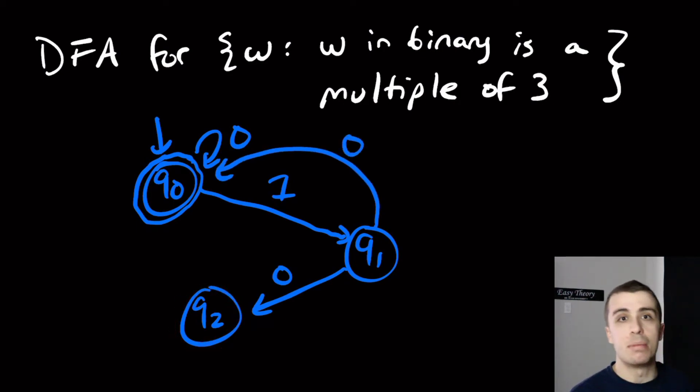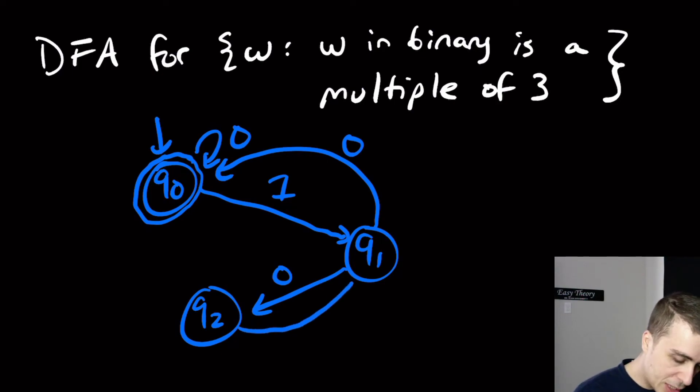And then for this state, if we multiply the remainder by 2, we get 4. So then reduced by 3, it becomes 1. So the 0 transition is going to come back here.